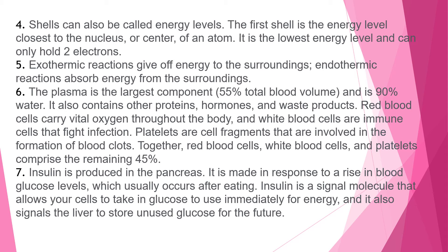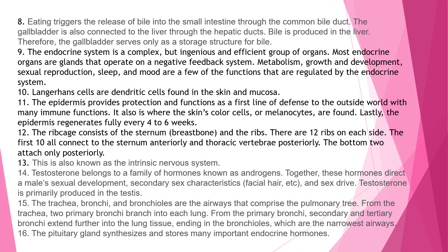Explanation 7: Insulin is produced in the pancreas in response to a rise in blood glucose levels, usually after eating. It signals your cells to take in glucose for energy and signals the liver to store glucose for the future. Explanation 8: Eating triggers the release of bile into the small intestine through the common bile duct. Bile is produced in the liver; the gallbladder serves only as a storage structure for bile.